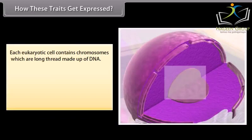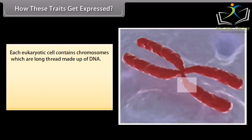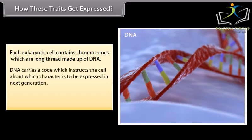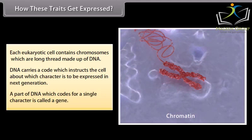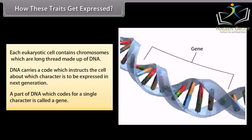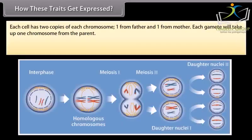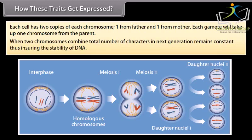How these traits get expressed: each eukaryotic cell contains chromosomes, which are long threads made up of DNA. DNA carries a code which instructs the cell about which character is to be expressed in the next generation. A part of DNA which codes for a single character is called a gene. Each cell has two copies of each chromosome — one from the father and one from the mother. Each gamete will take up one chromosome from the parent. When two chromosomes combine, the total number of characters in the next generation remains constant, thus ensuring the stability of DNA.